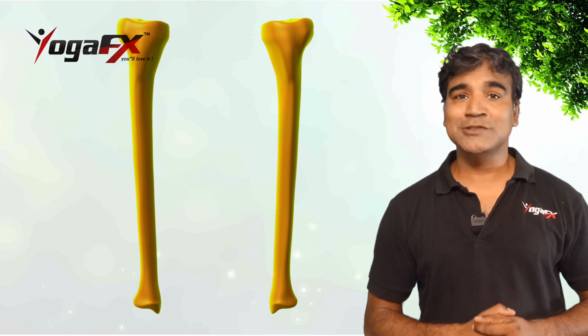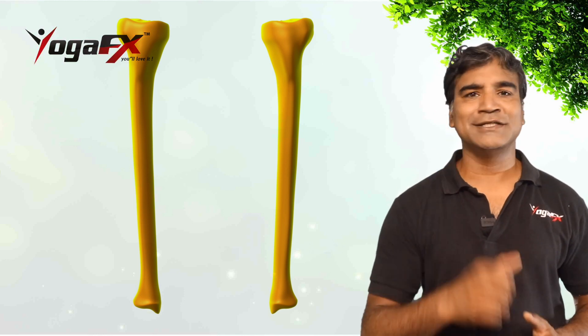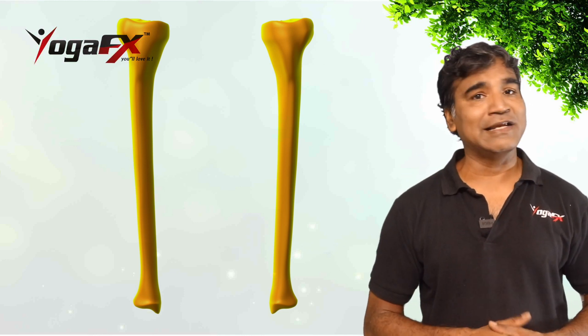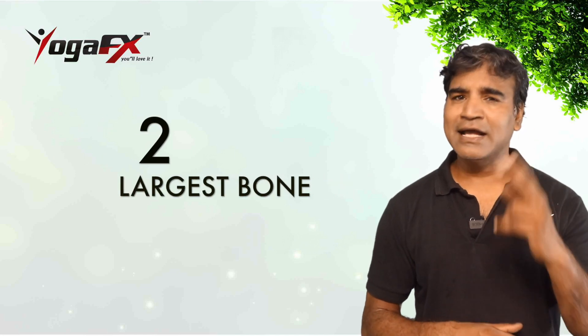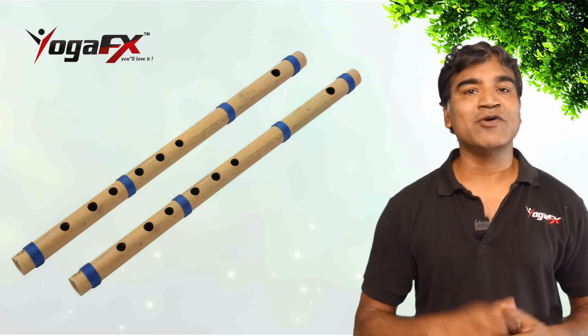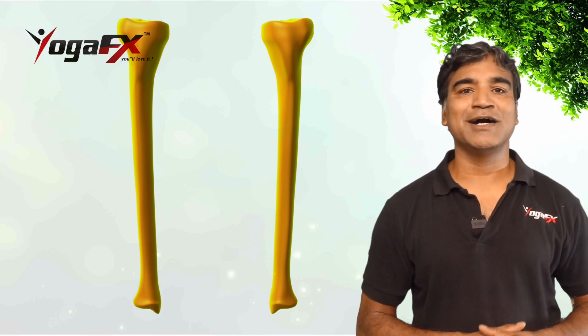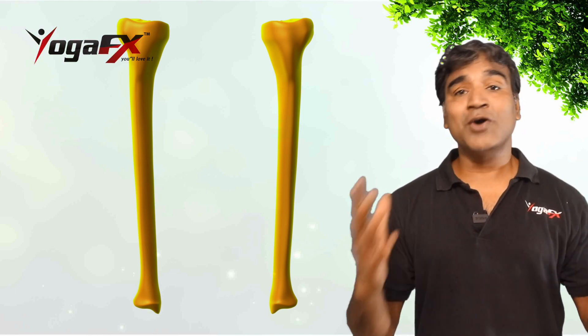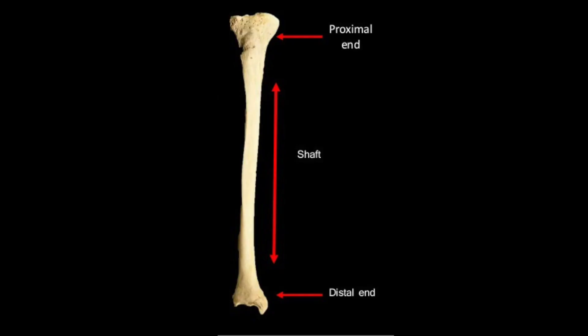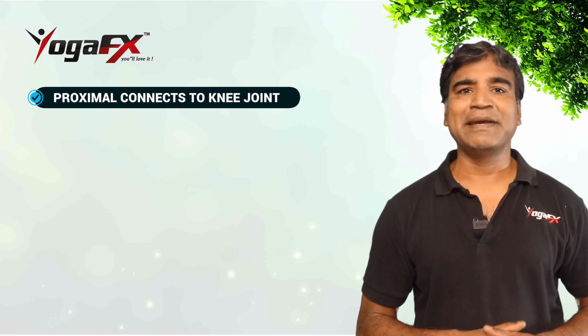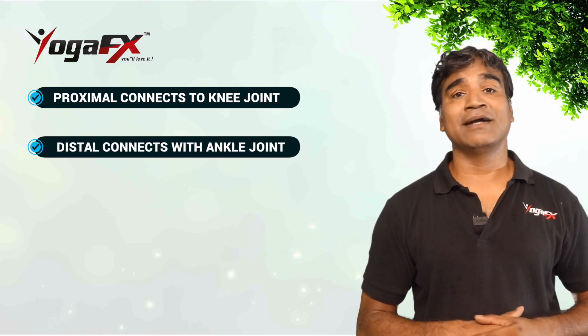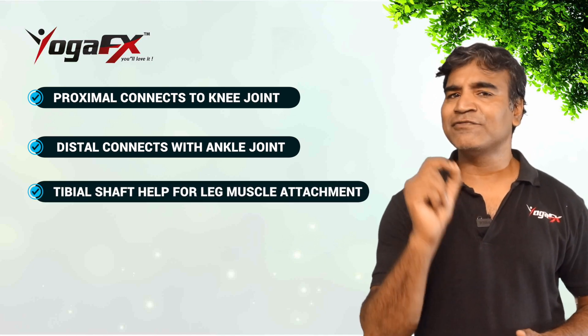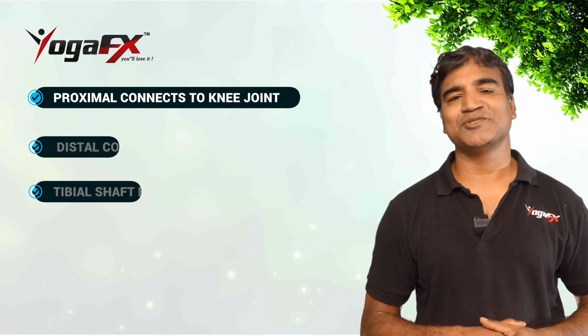The tibia, also known as the shin bone, is a long bone of the leg formed medial to the fibula. It is the weight-bearing bone of the leg, which is why it is the second largest bone in the body after the femur. Interestingly, tibia is the Latin word for tubular — a musical instrument like the flute — and they were sometimes made from tibial bones of animals. Like other long bones, the tibia has three parts: proximal, shaft, and distal. The proximal part participates in the knee joint, the distal part contributes to the ankle joint, and the tibial shaft offers many sites for leg muscle attachment.